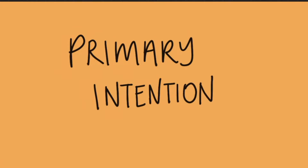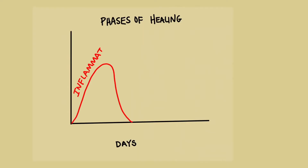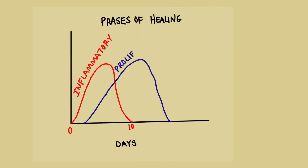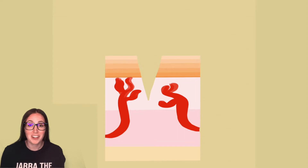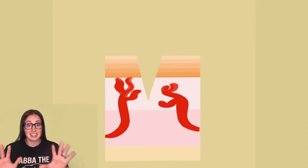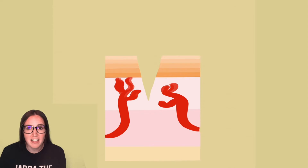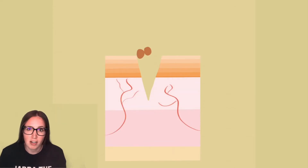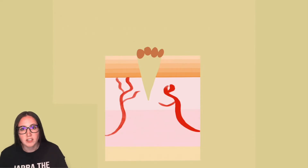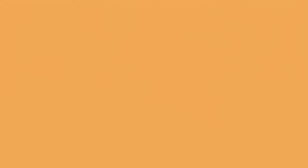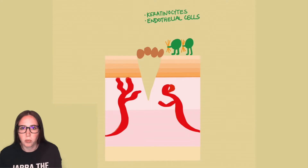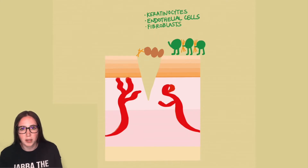Back to healing by primary intention. This typically happens in three overlapping phases: inflammatory, proliferative, and maturation. The first part is hemostasis — stop the bleeding. This involves immediate vasoconstriction as well as platelet aggregation to form a scab over the wound. Once the bleeding issue has been managed, the vessels then dilate to bring in cells that will help clean up any debris or bacteria in the wound bed. The new inflow of blood will also bring cells that will replace this scab with collagen to form a scaffolding for new tissue.